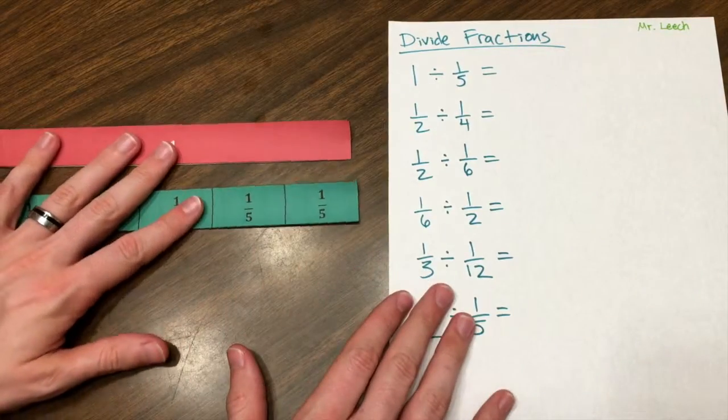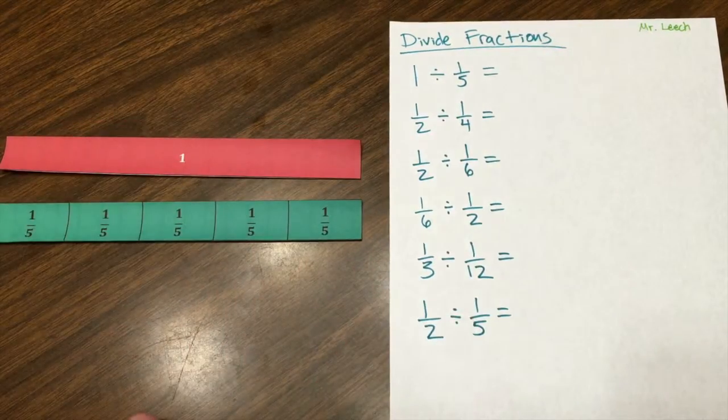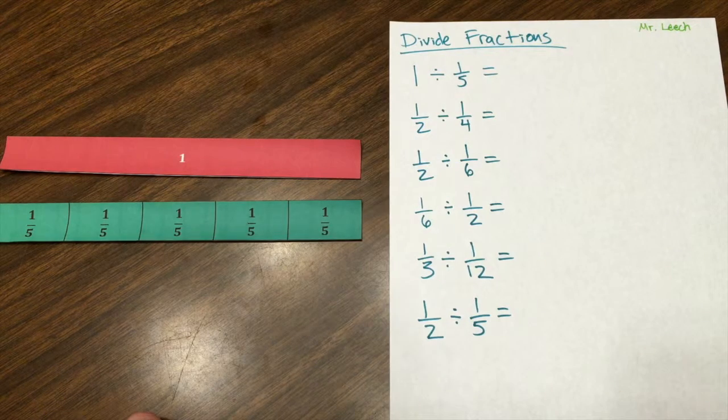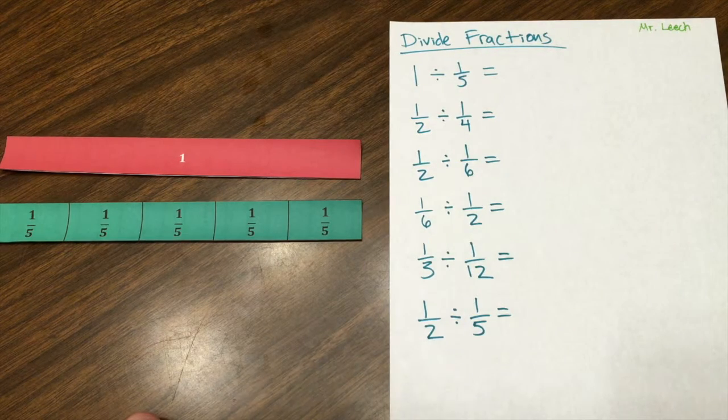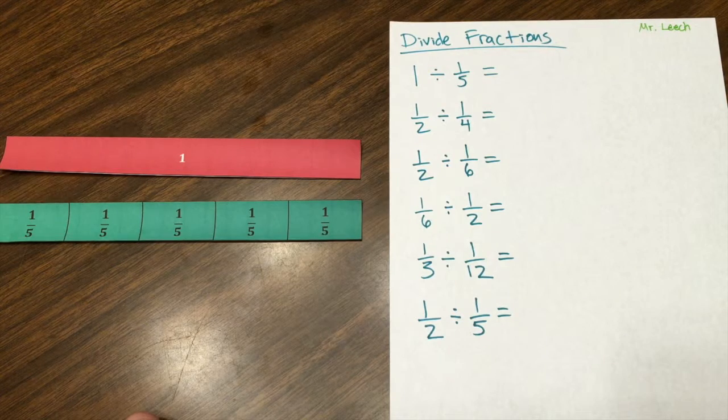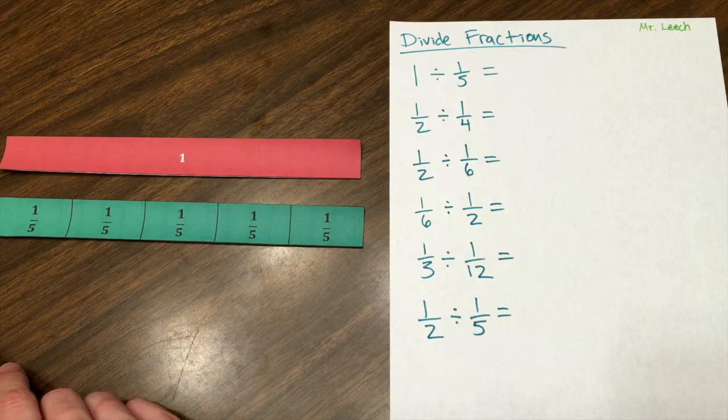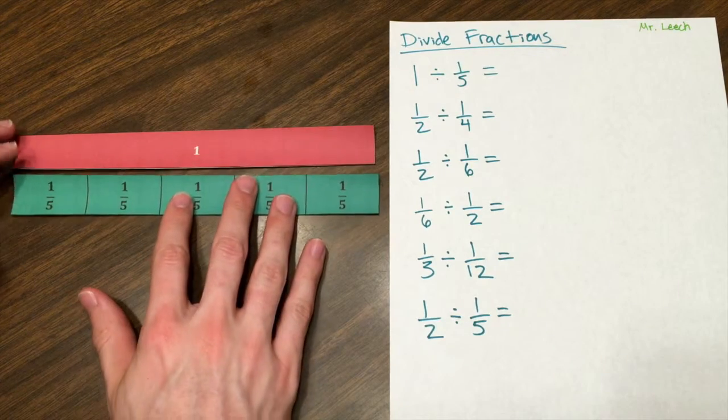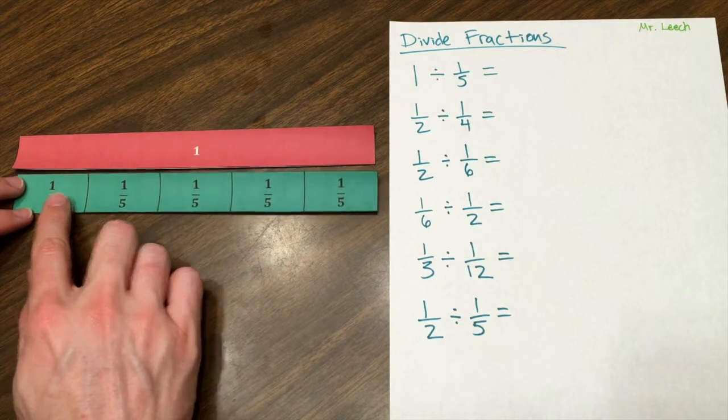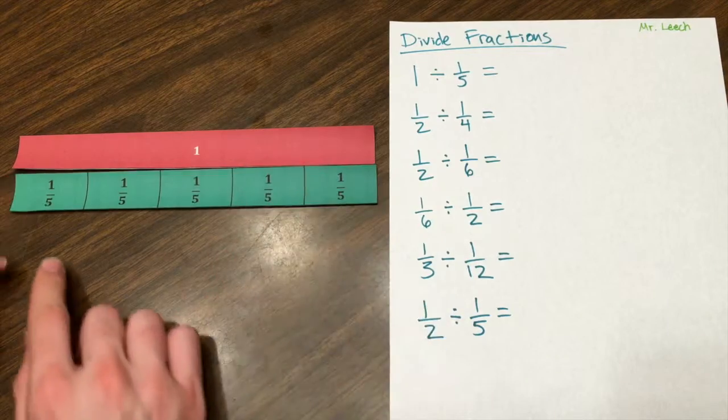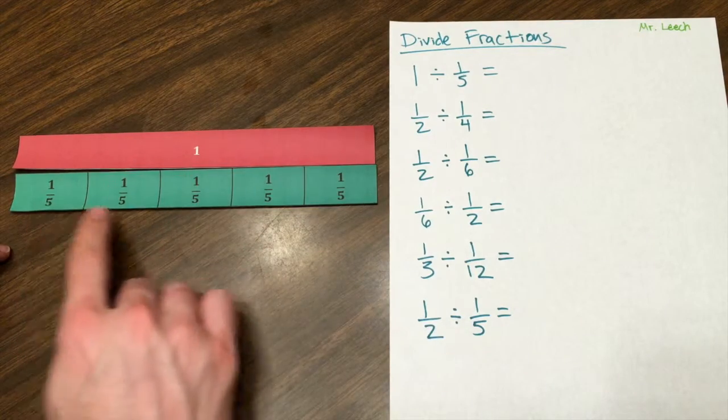So now let's do this for one and one-fifth. In my multiplication video, I started with one times one-fifth. This time I'm going to start with one divided by one-fifth. How many times does one-fifth go into one? Well we can clearly see that right here that I have five one-fifths, and so one-fifth goes into one five times.